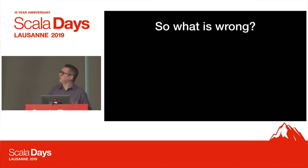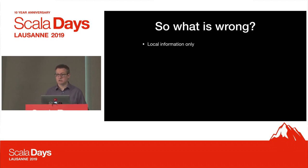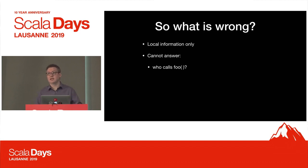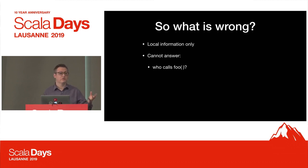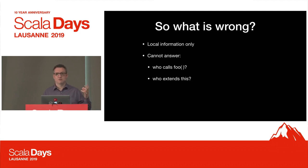So what's wrong with all these tools? They tend to work at the local information level. There's a bunch of things they cannot tell you about the code. For example, who calls foo? Who calls this method? IntelliJ will tell you - you can ask it - and Metals will tell you. But the linter tools tend to look at direct data that's physically there: the jar file or the semantic DB file. Or who extends this? If you've ever tried to get the language to tell you what are the subclasses of a class, you'll know why this is a problem.